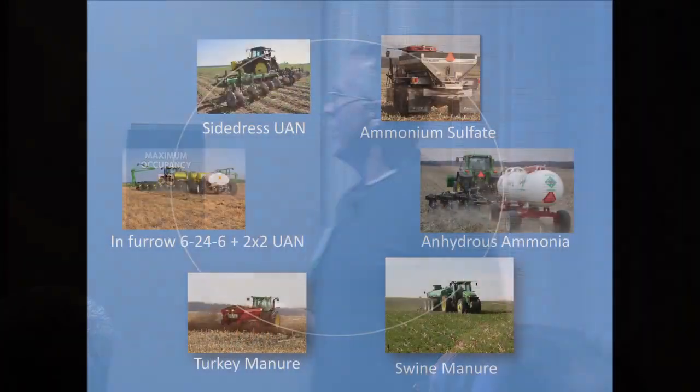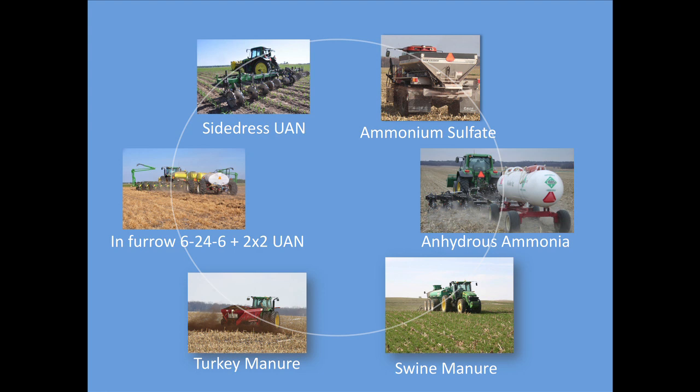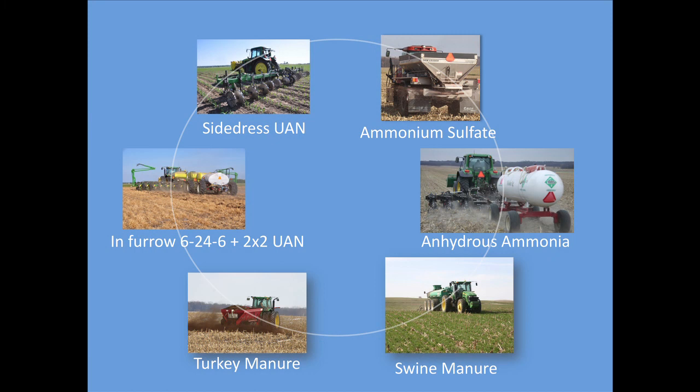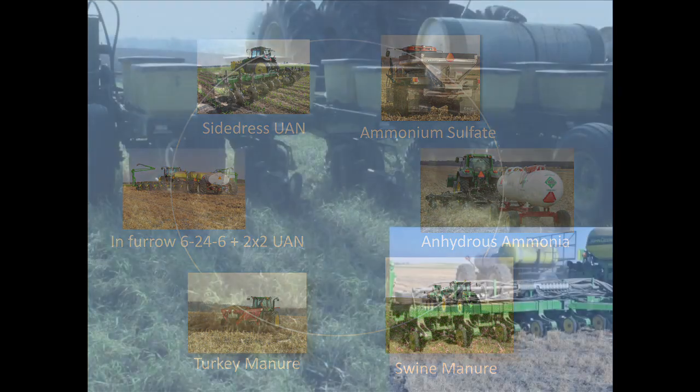Our nitrogen program uses a little ammonium sulfate in the fall, some anhydrous, quite a bit of two different kinds of manure, nitrogen applied with the planter in two different places, and then side dress — not every acre every year. What I need to learn is where I can start cutting that back and when. I noticed the fertilizer openers on the side dress unit, which is good. We're still learning.